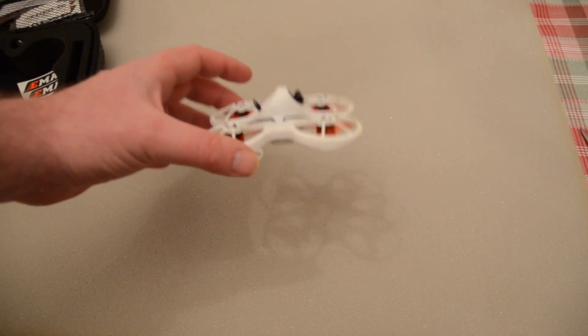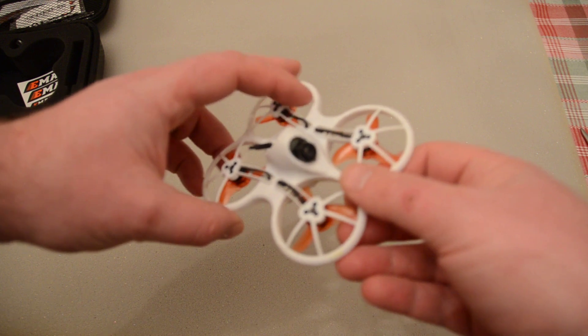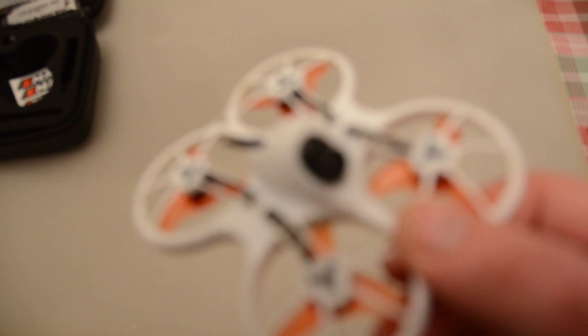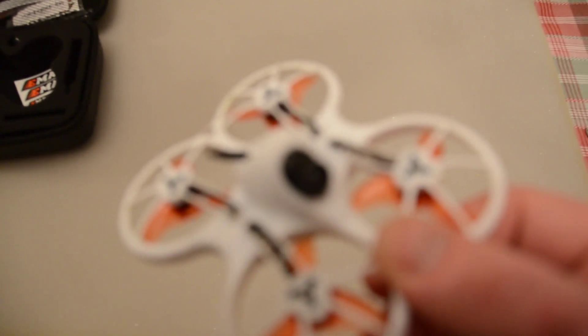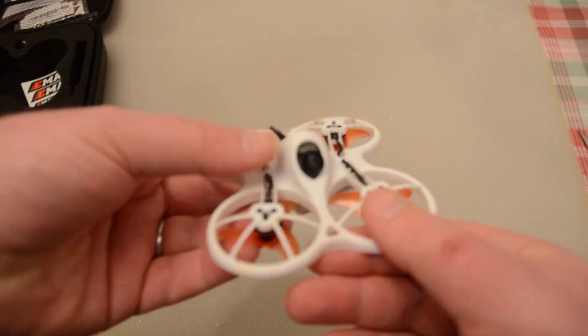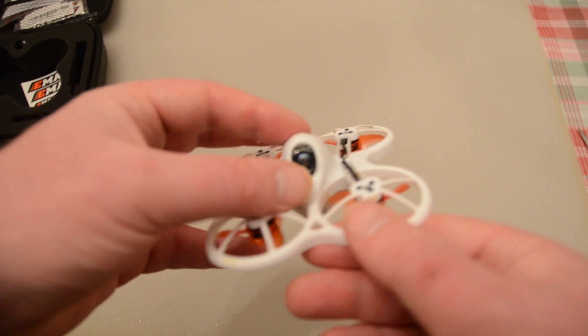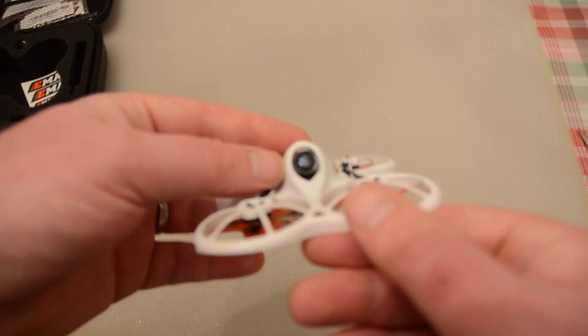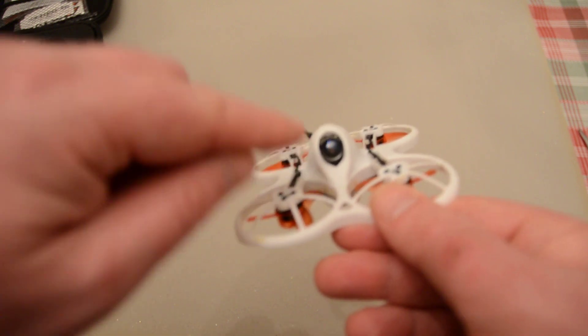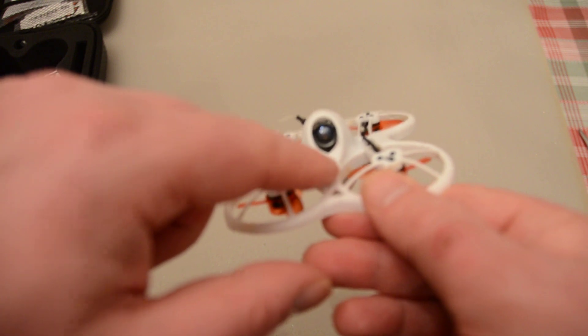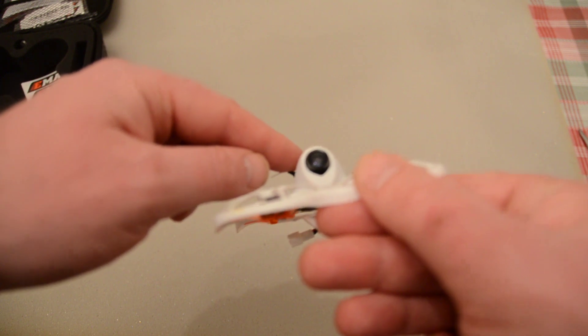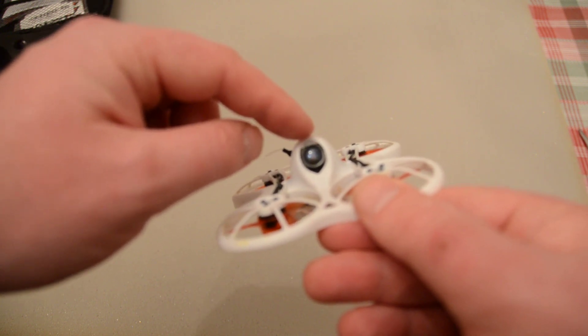So the first thing you need to do is pop the actual camera out. Now it's kind of hard to see, but basically at the bottom on the camera board there's a small tab that fits into a slot in the bottom of this plastic housing here, and again at the top, another small tab in there.